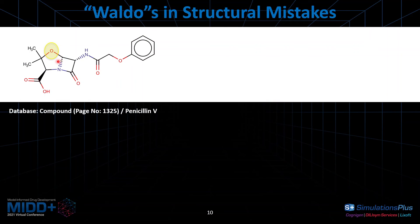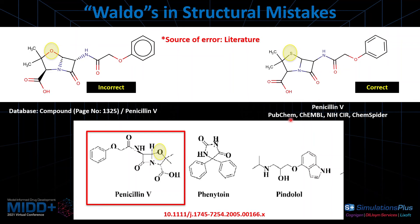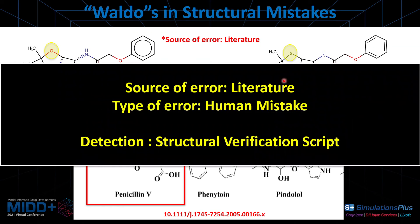Here is another structural mistake. This entry is coming from a database and reported by only one database. When we look it up in the original literature, the structure in the database is exactly how it is reported in the article. But it is not correct, because when we look at the compound in different databases, there should be a sulfur here instead of an oxygen. Based on the consensus of multiple databases, we confirmed that the corrected structure is the right one. In this case, the mistake is coming from the literature, and we were able to verify it using a structural verification script developed internally to check structures where names are being reported.